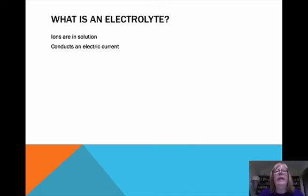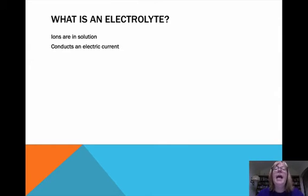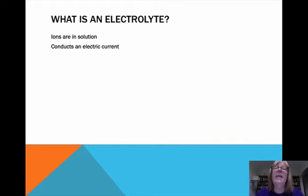What is an electrolyte? An electrolyte is something that has ions that are in solution — and that's key. You need to have ions, so positively and negatively charged ions have to be floating around in solution. And because ions are floating in solution, this solution will conduct an electric current. And so we call it an electrolyte.